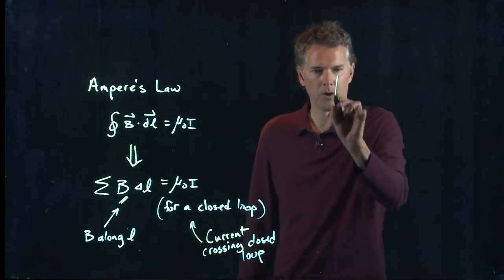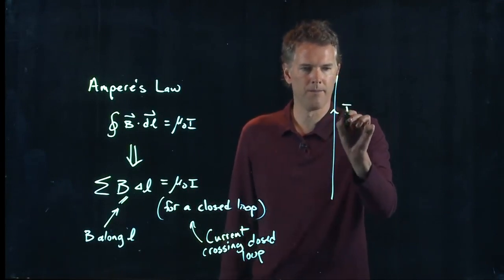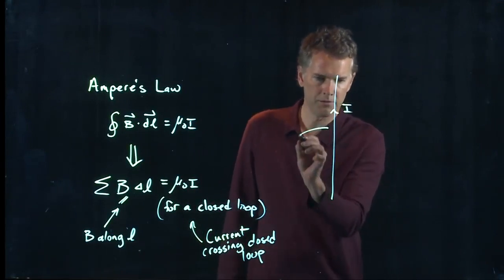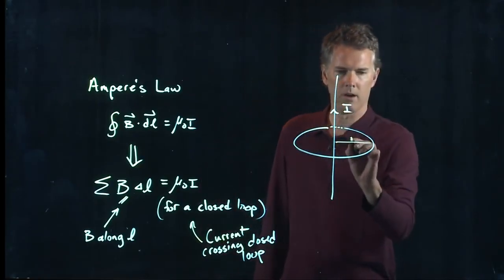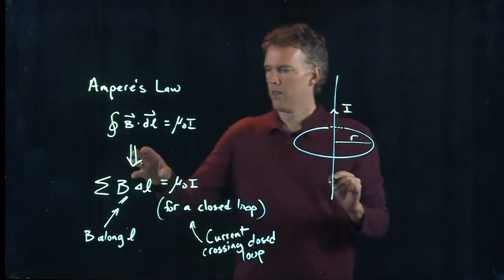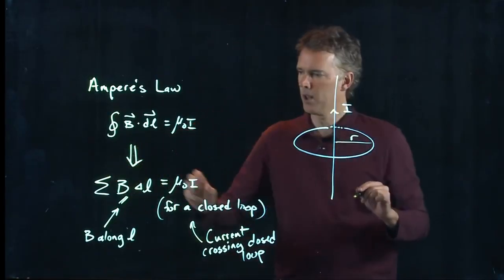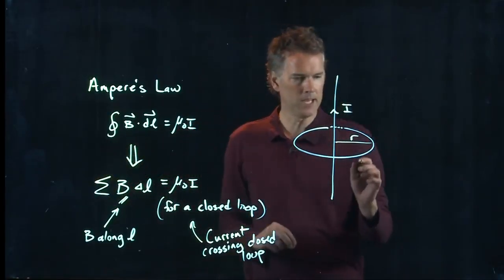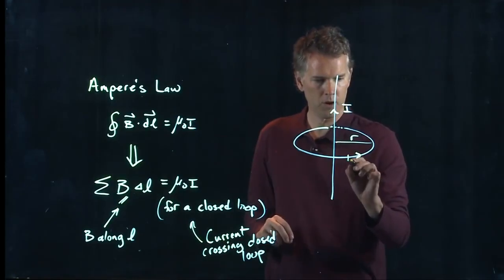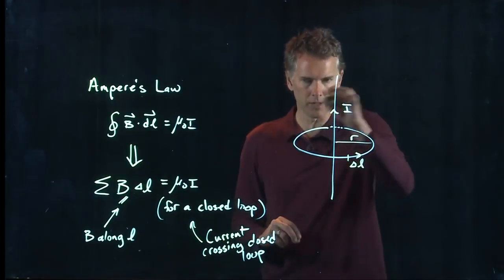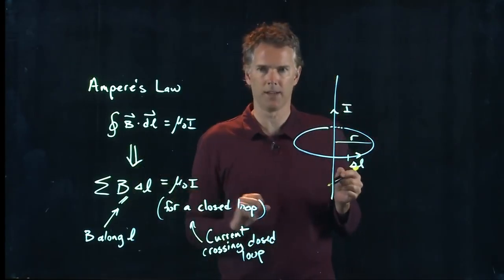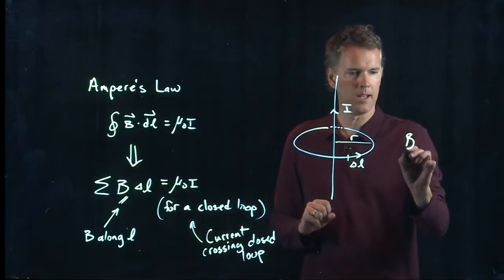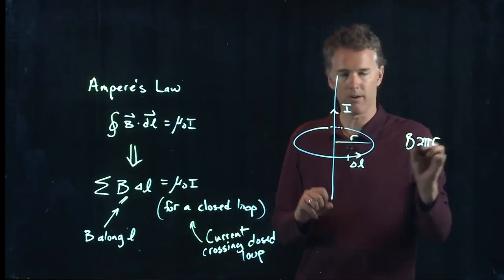So, for instance, with our long straight wire, if I draw a circle around this thing of radius r, then the left side of this becomes what? Well, I have to sum B over all these little ΔL's as I go around. But if I go around a circle, I know exactly what ΔL adds up to be. It adds up to be 2πr.